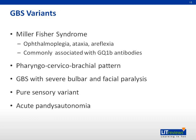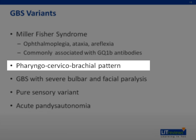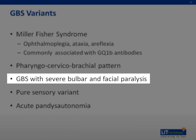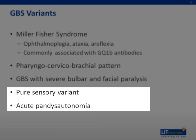There are regional variants of GBS. These include Miller-Fisher syndrome, characterized by ophthalmoplegia, ataxia, and areflexia. In the pharyngeal-cervical-brachial pattern, the pharyngeal and upper limb muscles are predominantly affected. In another rare variant, there is severe bulbar and facial paralysis with variable limb weakness. A pure sensory variant and a variant with only pandysautonomia have also been described.